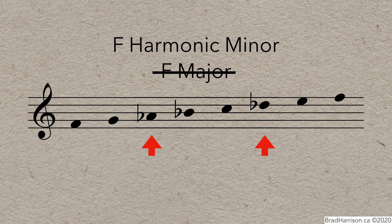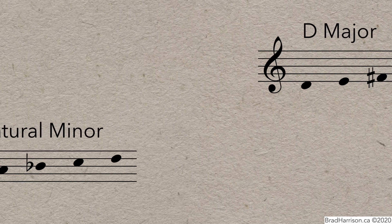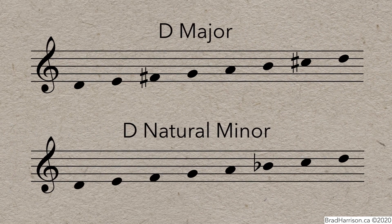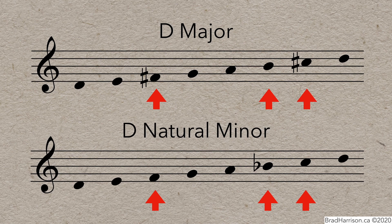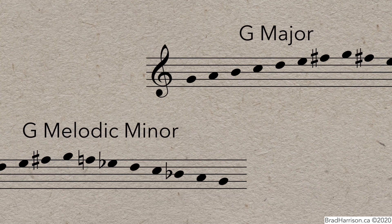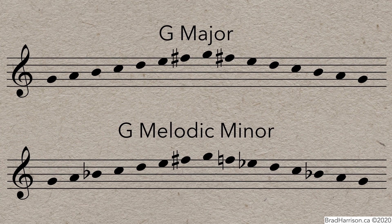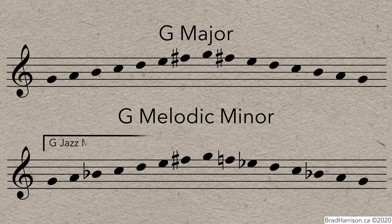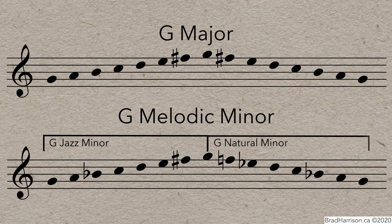We can also transform the major scale into other types of scales using a different set of alterations. Comparing the major scale to the natural minor scale, we see that the 3rd, 6th, and 7th are lowered by a semitone, so any major scale can be transformed into natural minor by just lowering these three notes. The melodic minor scale is a bit tricky because it's different on the way up and down, but it's just a major scale with a lowered 3rd on the way up, and on the way down it has a lowered 7th, 6th, and 3rd. You could also think of it as jazz minor on the way up and natural minor on the way down.